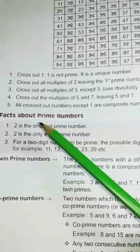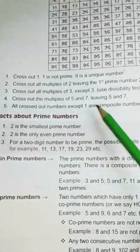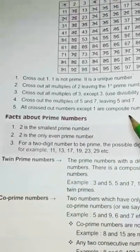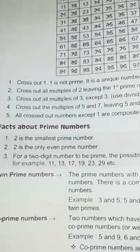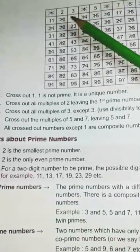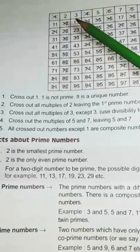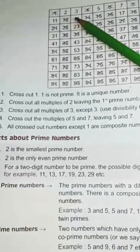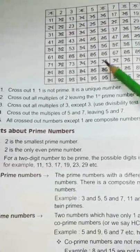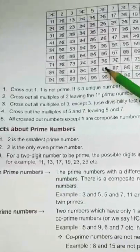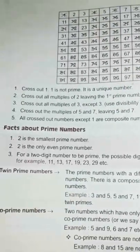Fifth point is, all crossed out numbers except 1 are composite numbers and rest are prime numbers. So, except 1, what are not crossed out, they are known as prime numbers, like 2, 3, 5, 7. Here, you find out. And, which are crossed out, they are known as composite numbers.